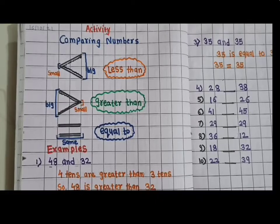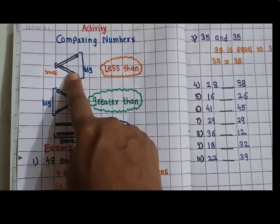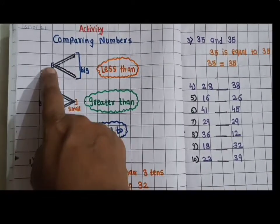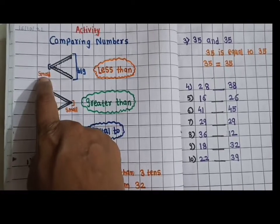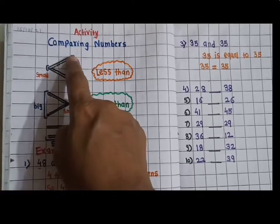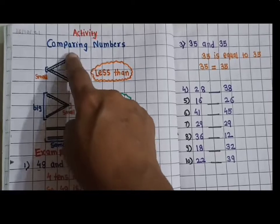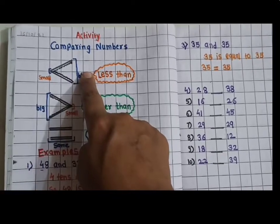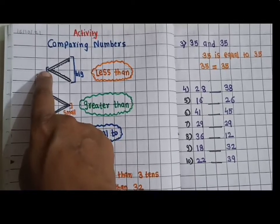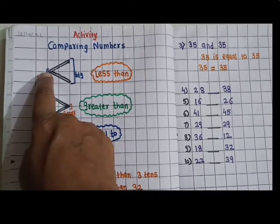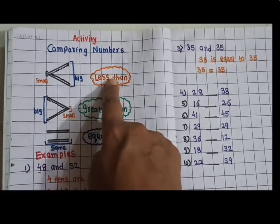See here are the signs of comparing. This is the sign of less than. Here is one point and left side there will come small number, and here the open arrow or open space, so here will come big number. So this left side with the joined points is called the sign less than.